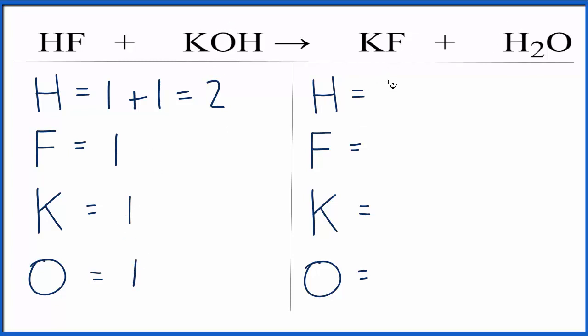Over on the product side, we have two hydrogens. We have one fluorine atom, one potassium atom, and one oxygen atom.